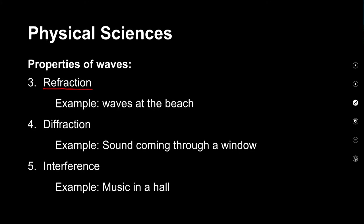The next property of waves we've had a look at is diffraction — the process whereby waves can bend through an opening and then spread out. This opening is often called an aperture in physics. A nice example of this is if there's a large group of people making noise in a room with a single open window; you can usually hear the sounds even if you aren't standing directly in front of the window, because the sound waves are diffracting through the opening.